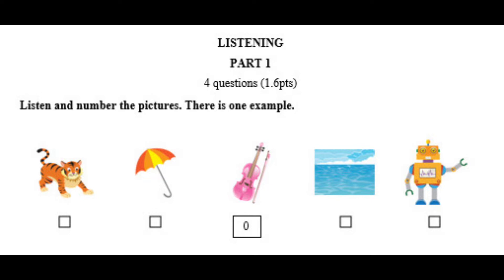Now listen again. 1. R, r, robot. 2. U, umbrella. 3. T, t, tiger. 4. S, s, see.